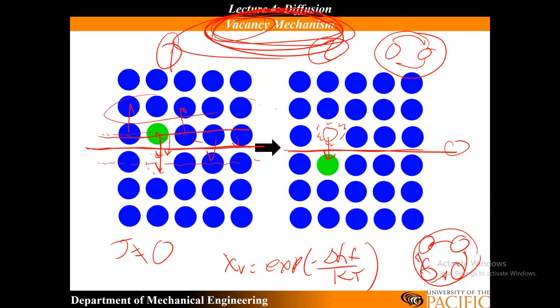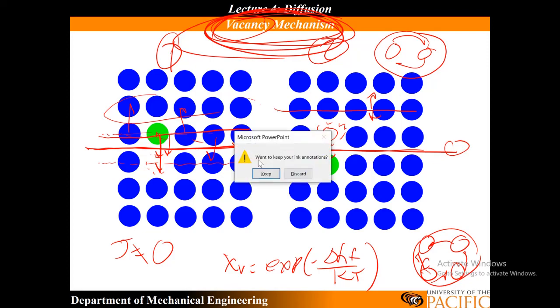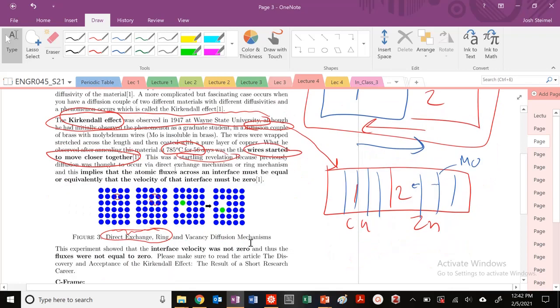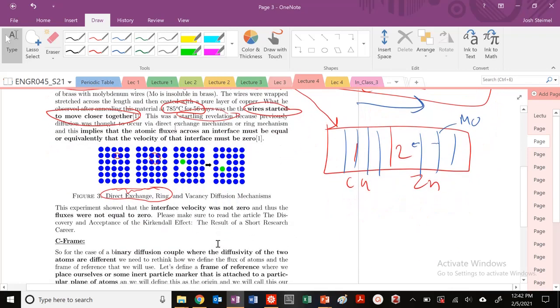But because the flux of atoms is now non-zero, if you place a line or a marker, this interface will move if you have these two, if you put a diffusion couple with two materials with two different diffusivities. So, the genius of Kirkendall, he had to fight with some political people that didn't want to accept his revelation. They didn't want to accept his revelation on how materials actually diffuse through materials.